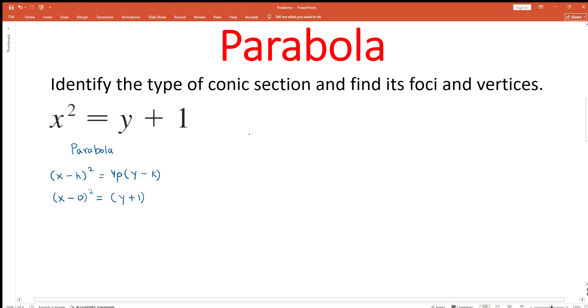As we can see, h = 0, k = -1. Because y + 1 can also be written as y - (-1). Since there is a negative sign in the general equation, k becomes equal to -1.